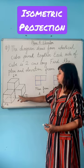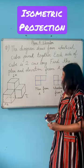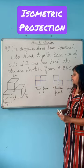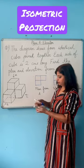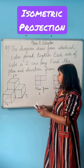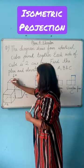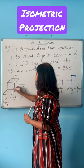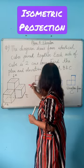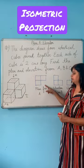What you have to do is find the plan and the elevation. Now what is plan here? Plan is the top view. So when you look from the top, you will be seeing this side, this side, and this side. So that is the plan from A.